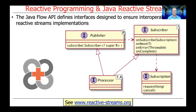There are four core interfaces that are part of the Java Flow API, and these are designed to ensure interoperability between different Reactive Streams implementations. As you can see here, we have a publisher interface with a method called subscribe, and a subscriber interface with several methods like on-subscribe, on-next, on-error, and on-complete.